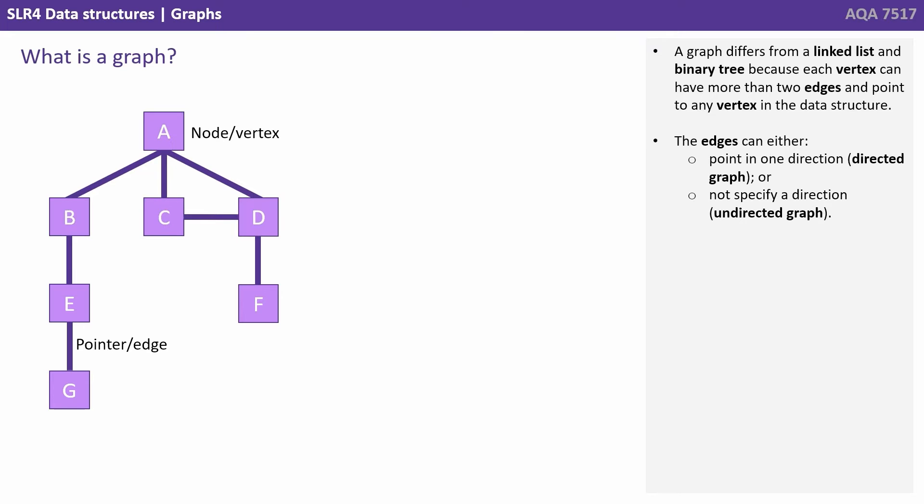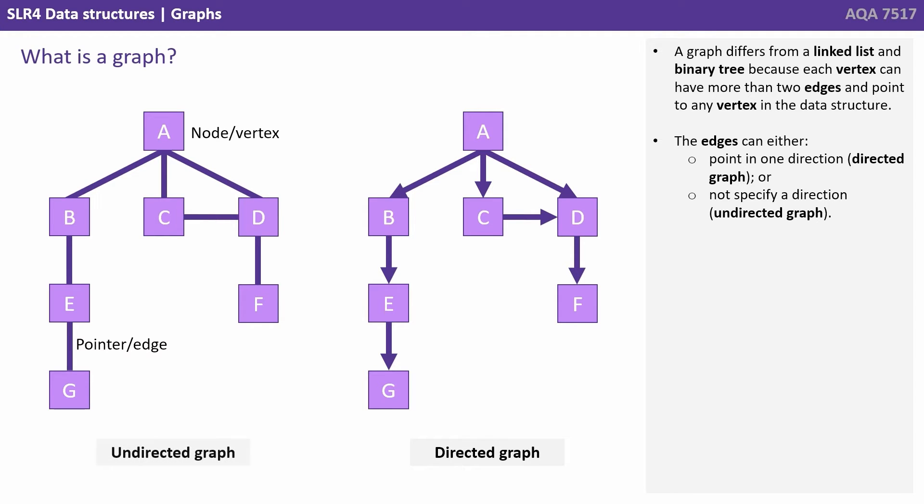The edge can either point in one direction, that's a directed graph, or not specify a direction, that's an undirected graph.